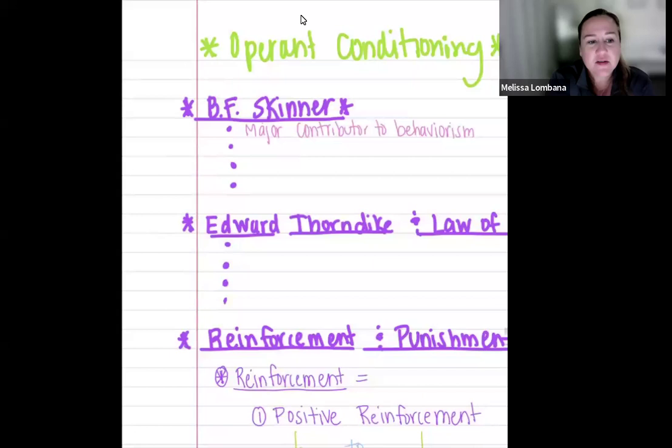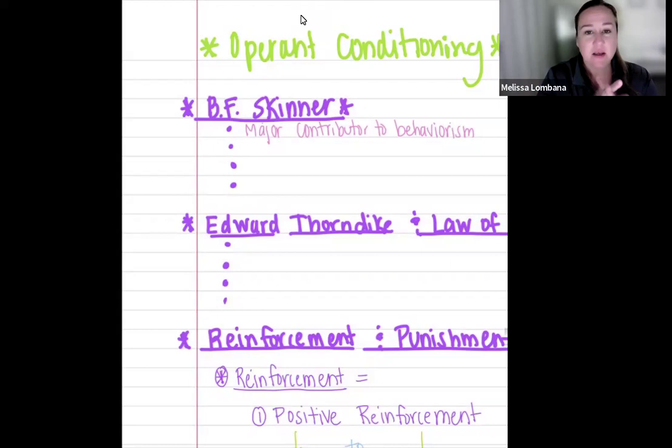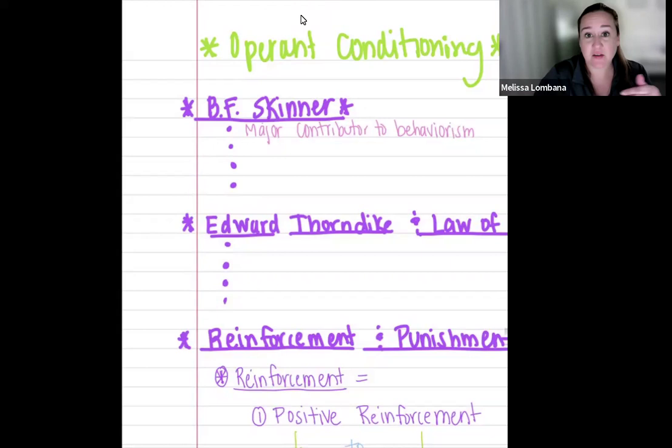He basically believed that every behavior has a consequence. You do something and it's going to have a consequence. Now, this is not the consequence that we think of as bad — consequence is just an outcome. So make sure that you write that down: every behavior has a consequence, and in parentheses, it's basically just an outcome. That's what consequence means.